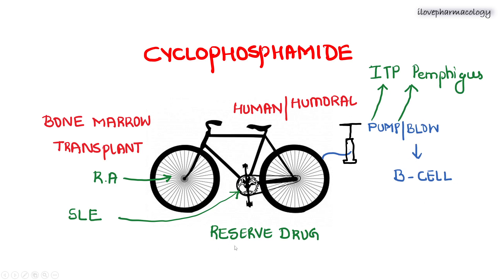Cyclophosphamide is mainly used as a reserve or rescue drug. Pedaling the cycle strengthens the skeletal muscles — so cyclophosphamide can be used during bone marrow transplantation. The rails or spokes: R stands for rheumatoid arthritis. Since the pedal rotation is systematic, it can be used in systemic lupus erythematosus. The initial letter P and ending letter P represent idiopathic thrombocytopenic purpura and also treatment of pemphigus.